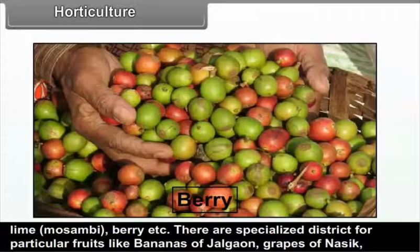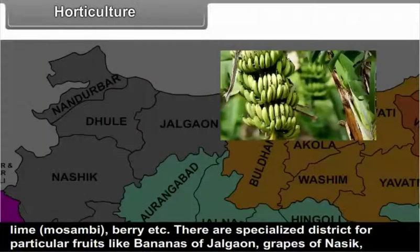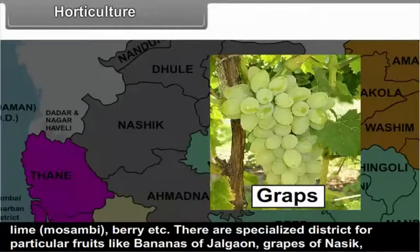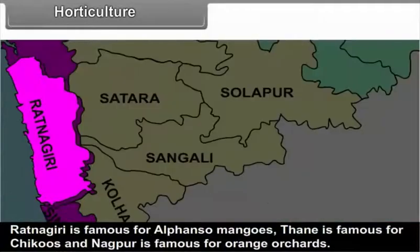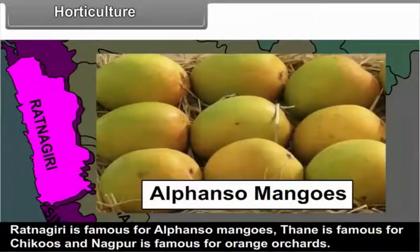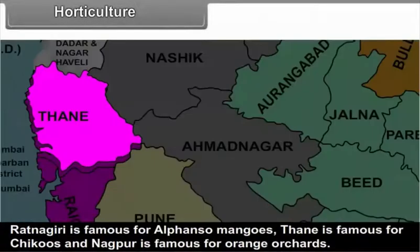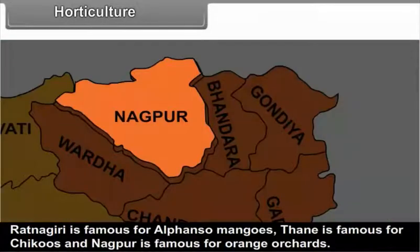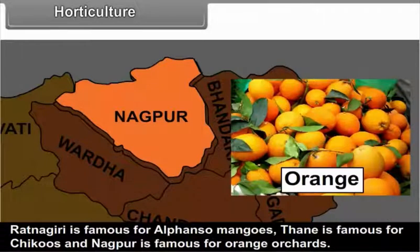There are specialized districts for particular fruits: bananas of Jalgao, grapes of Nasik. Ratnagiri is famous for Alphonso mangoes. Thane is famous for chikus, and Nagpur is famous for orange orchards.